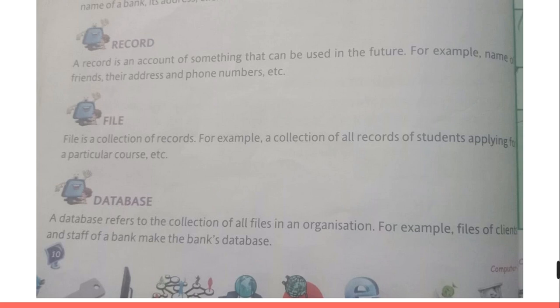Now let's see what is a file. A file is the collection of records — a collection of data combined together. When we collect records together, it makes a file. A database is a collection of many files and may contain many files containing different types of data.